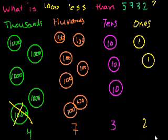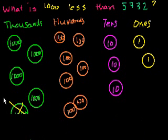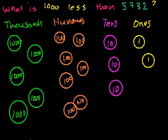Let me erase this and draw that 1,000 chip back so the original number is 5,732. Now instead of asking what is 1,000 less than 5,732, what happens if I ask: what is 1 less than 5,732?